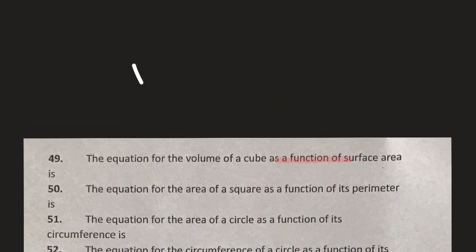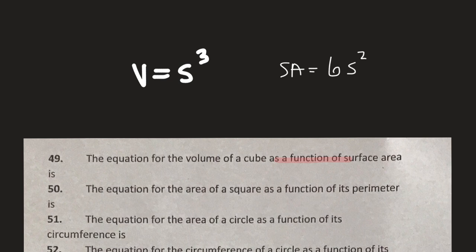I want volume of a cube, which is just s cubed. And the surface area of a cube is going to be 6s squared, because a cube has six sides and every side is a square. So the area of a square is s squared, and there are six of them — so 6s squared.